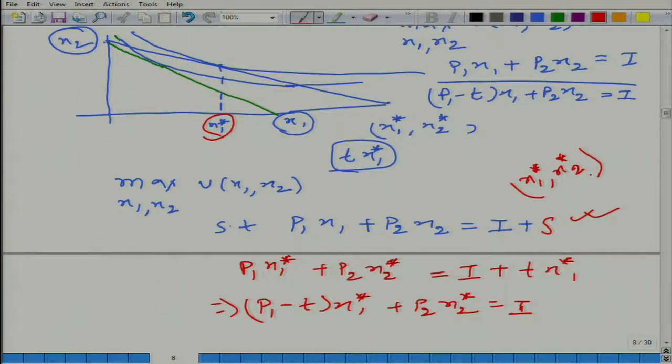Now we can draw this line. What we know is there is a parallel shift and it will pass through x₁*, x₂*. We also know that our new budget line is steeper than this line and passes through this point. So it will be something like this. These two lines should be parallel.